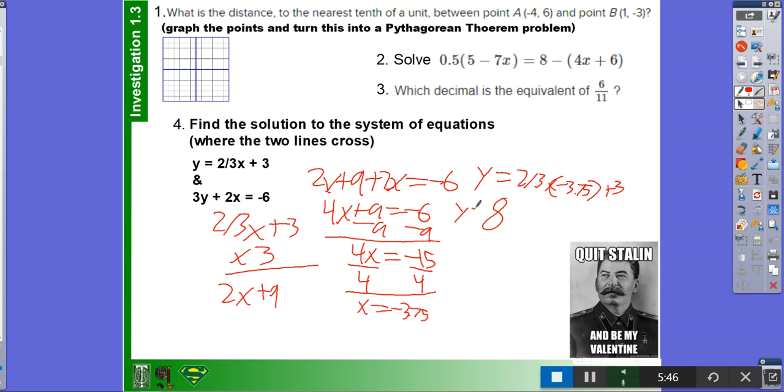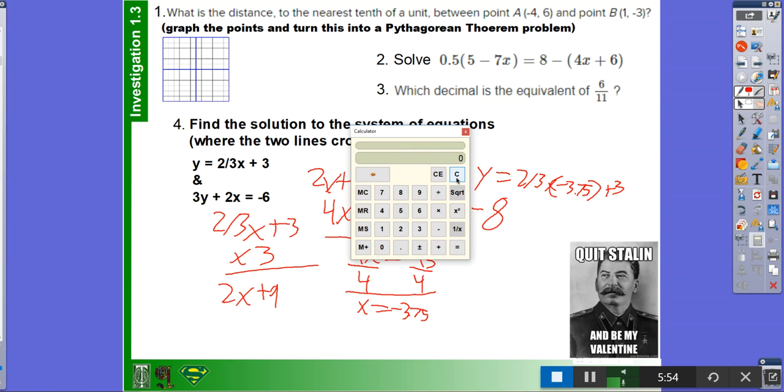Negative 3.75 times 0.6666 is equal to 2.5. So y is equal to 2.5 plus 3. And then 2.5 plus 3 is equal to 5.5.